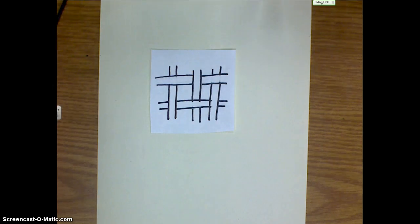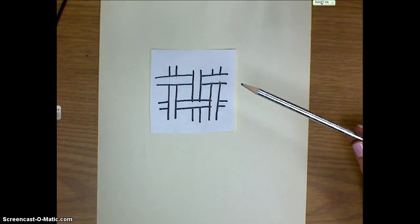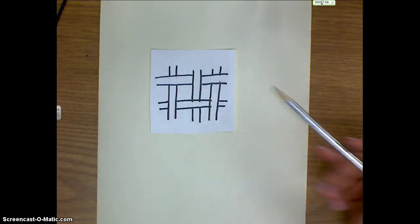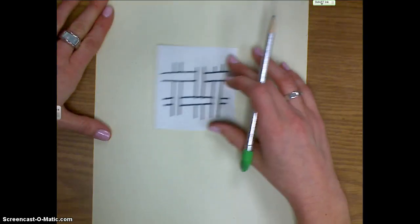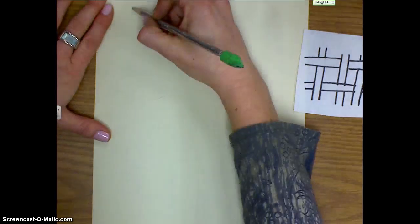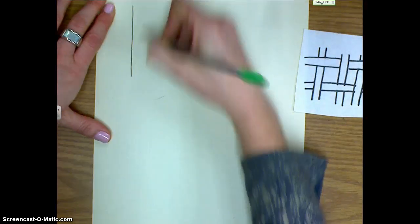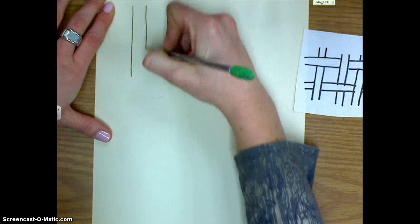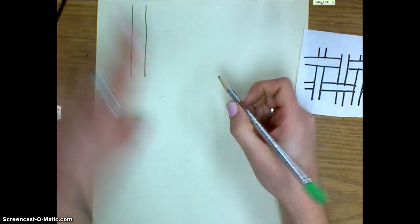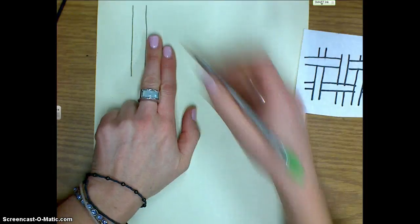Today we're going to start with learning how to do this plaid-looking pattern, weaving the lines under and over each other. To start out, we're going to begin like the last Celtic knot we drew. We started off with two lines that were close together, both vertical lines parallel with each other.